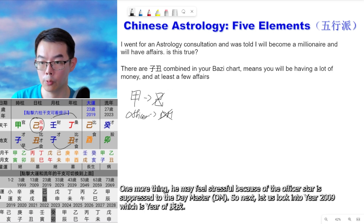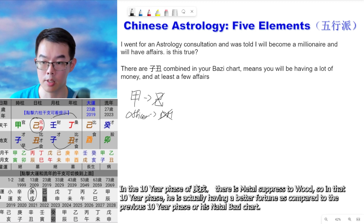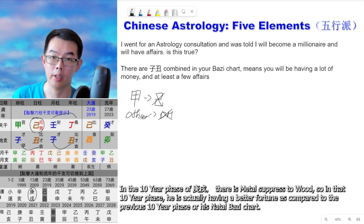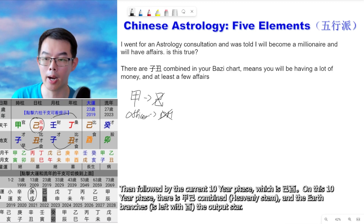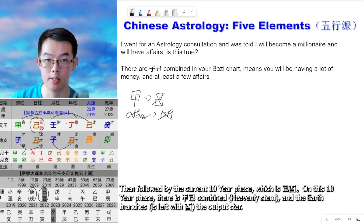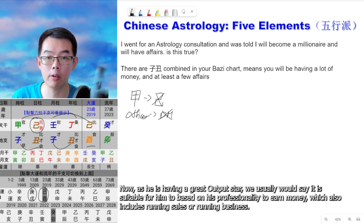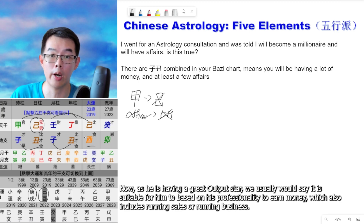Let us look into the ten-year phase of Geng Xi, starting around 2009. In that ten-year phase, metal is suppressed to wood, so it is actually having a better fortune compared to his natal Ba Zi chart. Then, in the current ten-year phase of Ji Ji, there is a Jia-Ji combination and the earth branches show the output star. Since he has a strong output star, it is suitable for him to leverage his professional skills to earn money, which includes running sales or business.